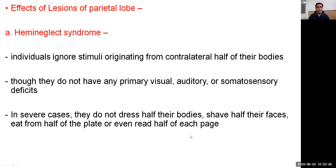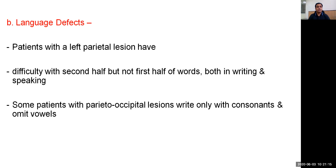What are the effects of a lesion in the parietal lobe? The first is hemi-neglect syndrome — individuals ignore stimuli originating from the contralateral half of their bodies without any primary visual, auditory, or somatosensory deficiency. In severe cases, they do not dress half their bodies, do not shave half their faces, or eat from half of the plate. There are also language defects: patients with left parietal lesions have difficulty with the second half of words in both writing and listening, and some patients with parieto-occipital lesions write only consonants and omit vowels.